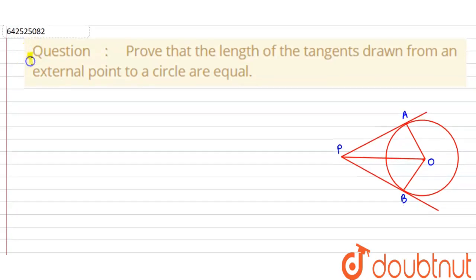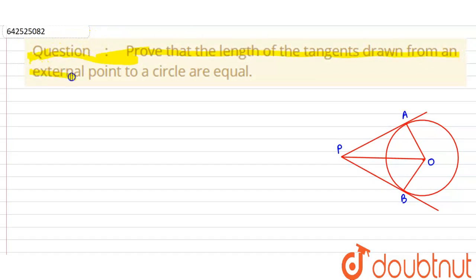Hello everyone, let's start this question. This question says that prove that the length of the tangents drawn from an external point to a circle are equal.